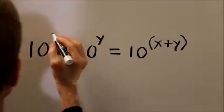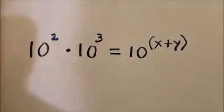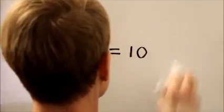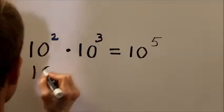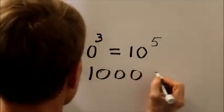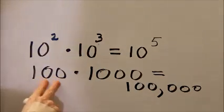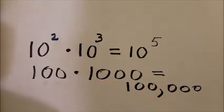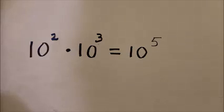For example, ten squared times ten cubed equals ten to the fifth, which we can write as one hundred times one thousand equals one hundred thousand. This particular formula also works for negative exponents and it will work for fractional or even irrational number exponents.